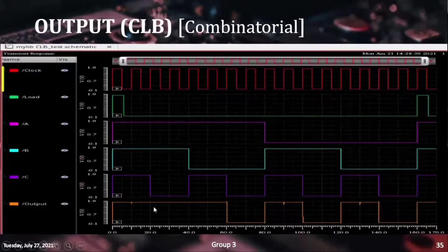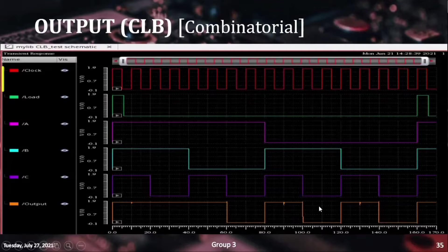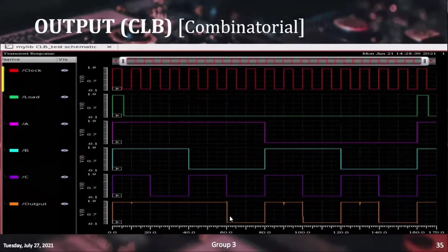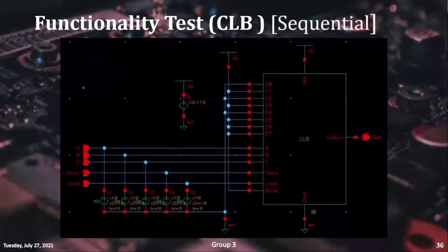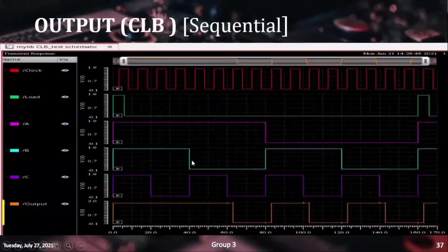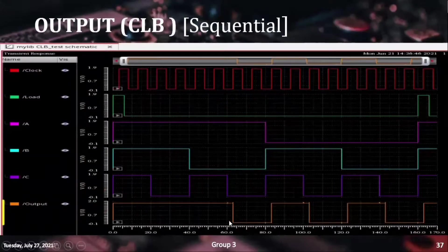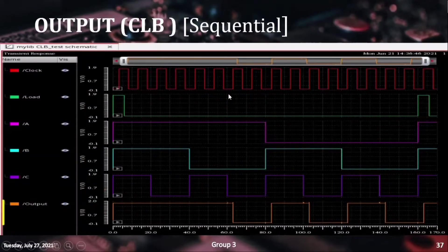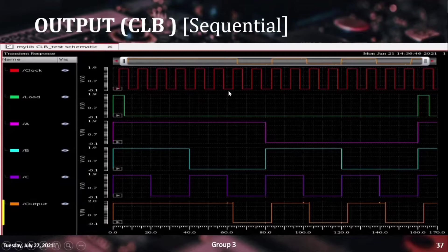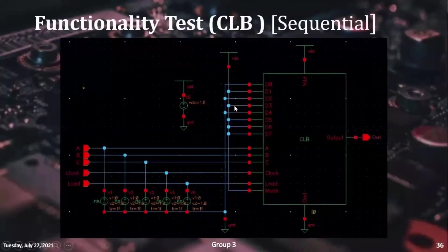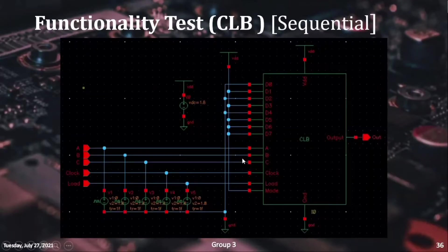In this graph, we can see that the CLB output follows the input instantly while in the combinatorial mode. After switching over to the sequential mode, we can see that the output now toggles only at the moment of a positive edge of the clock. By this, we can conclude that the CLB is working as desired.